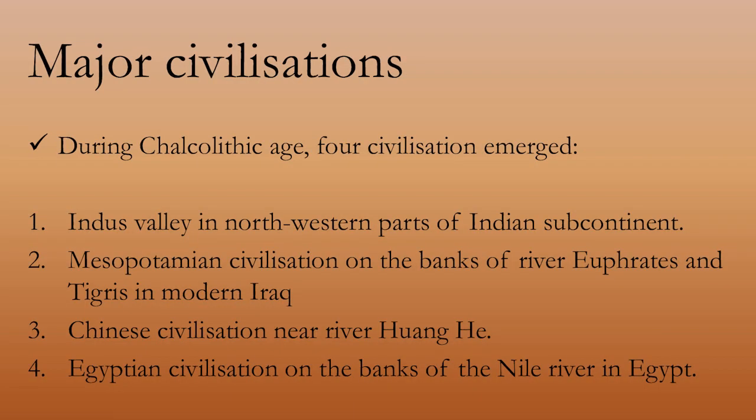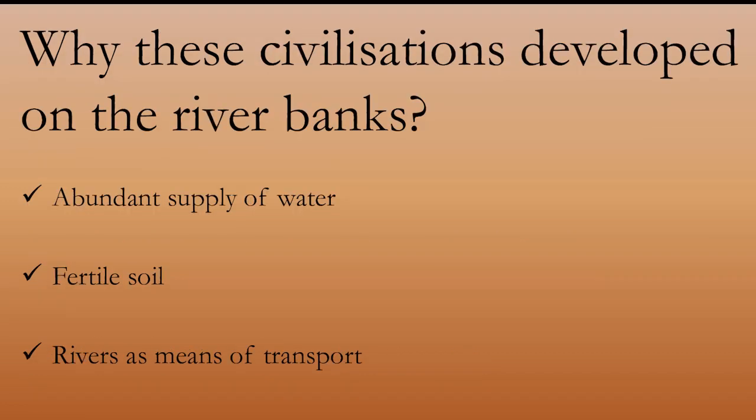During the Chalcolithic age, or the bronze age, four civilizations emerged: the Indus Valley Civilization in the northwestern part of the Indian subcontinent; the Mesopotamian Civilization on the banks of the rivers Euphrates and Tigris in modern Iraq; the Chinese Civilization near the river Huang He; and the Egyptian Civilization on the banks of the Nile River in Egypt. Why did all four major civilizations develop on river banks? Rivers assured a regular and sufficient supply of water, availability of fertile soil, and also provided a means of transport for carrying goods from one place to another.